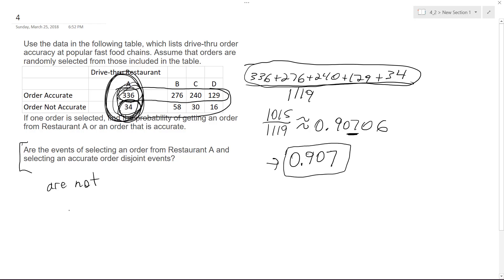So they are not disjoint because it's possible to receive an accurate order from A, or you can get an inaccurate one. And okay, I hope this helps you out. Thanks for watching. Have a great day.